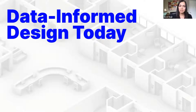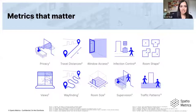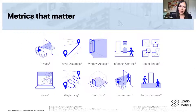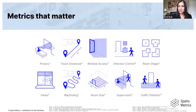What I'm focusing on is an owner-centric set of curated metrics that capture the quantitative and qualitative aspects of a space — really the human factors of design. By automated design data I mean automating the calculation of travel distances, access to daylight, window access, infection control, and things like privacy versus supervision, which are inherently at odds with each other.